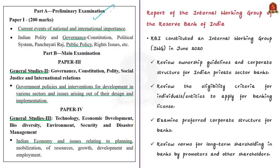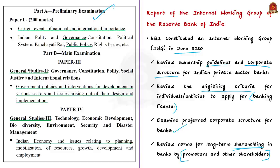Let us see for what purpose this Internal Working Group was constituted. RBI constituted the IWG in June 2020 for reviewing ownership guidelines and corporate structure for Indian private sector banks. The IWG also reviewed the eligibility criteria for individuals and entities to apply for banking licenses, examined the preferred corporate structure for banks, and reviewed the norms for long-term shareholding in banks by promoters and other shareholders. A promoter is a person or firm or company involved in setting up and funding a new company.